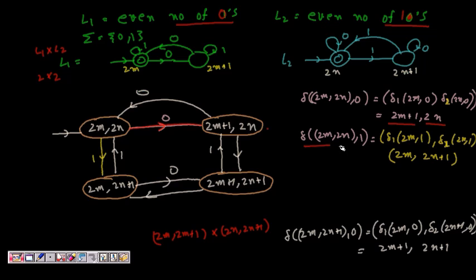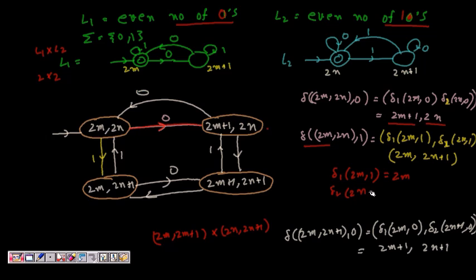From state (2m, 2n) on input 1: delta1(2m, 1) = 2m (ones don't affect L2's count), and delta2(2n, 1) = 2n+1 (odd ones now). So we transition to state (2m, 2n+1).